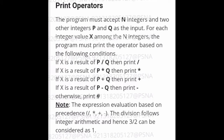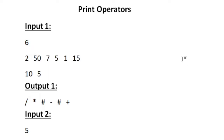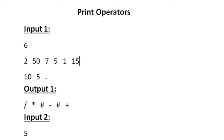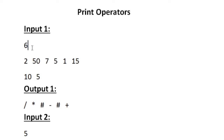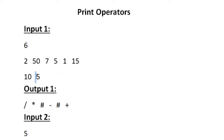This is our question asked in today's skill track daily challenge. Our input contains three lines: the first line contains the value of n, the second line contains n integers, and the third line contains the value of p and q. Our output contains n operators.